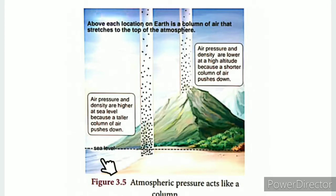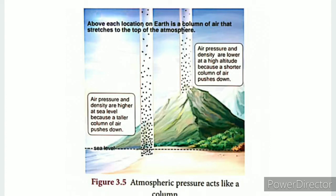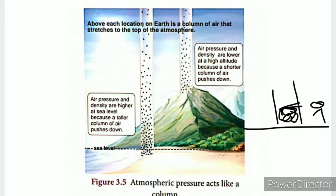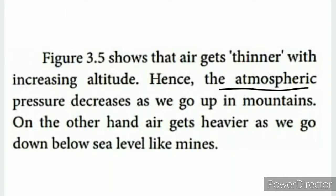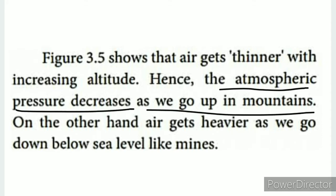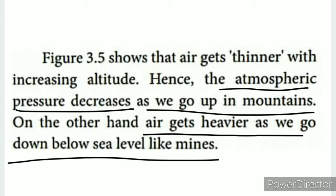If we measure from sea level and go up, the atmospheric pressure decreases. If we go down below sea level, the atmospheric pressure increases, because the air column above becomes heavier.